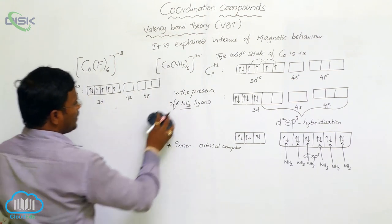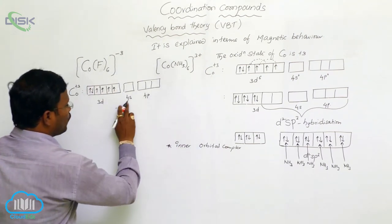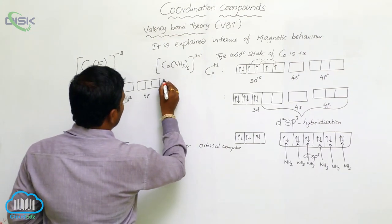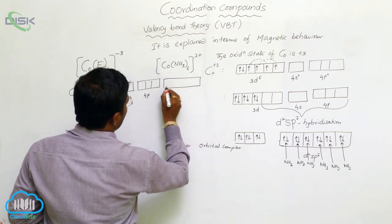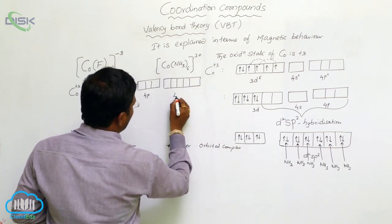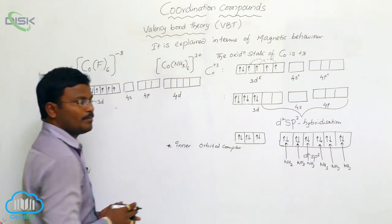But remember, in the same 4th orbit, in addition to s orbital and p orbital, one more orbital is 4d orbital present.